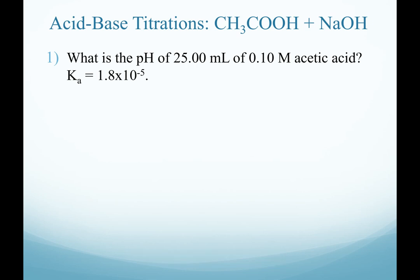Welcome back to our weak acid strong base titration. For our examples, we are working with 0.10 molar acetic acid, 25 milliliters of that, and we are adding volumes of 0.10 molar sodium hydroxide. The first point in our titration is when we have added 0 milliliters of sodium hydroxide. An equivalent question would be to calculate the pH of 25 milliliters of 0.10 molar acetic acid, given the Ka value because we have a weak acid.